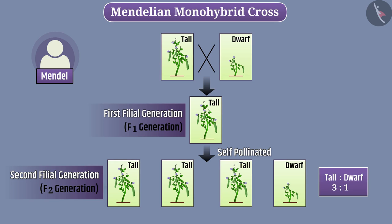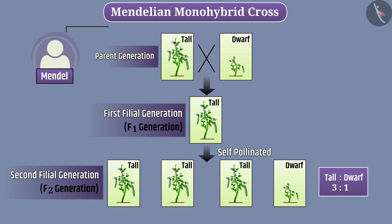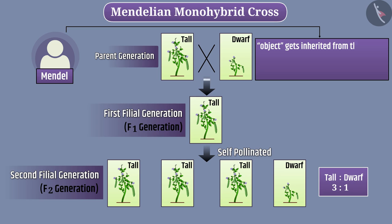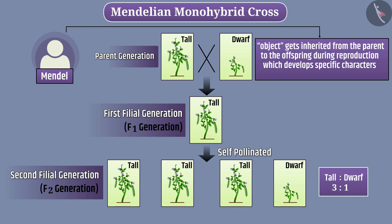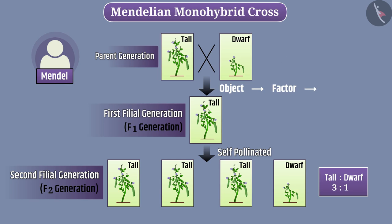No plant was of intermediate height, i.e. height in between the two. This means that the information of tallness and dwarfness must have been transmitted without any change from parent generation to F1 generation and from F1 to F2 generation. Mendel proposed that a certain object gets inherited from parent to offspring during reproduction, which develops specific characters in the offspring. Mendel called this object a factor — we call it a gene. Thus, gene is a unit of heredity.